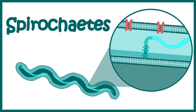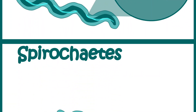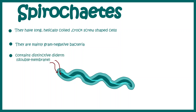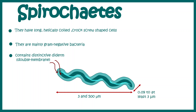In this short video we'll talk about spirochetes. Spirochetes are long helically coiled, corkscrew-shaped cells. They are bacteria and they are generally gram-negative in nature. They contain a distinctive diderm or double membrane organization. Their length is about 300 to 500 microns, whereas their diameter varies from 0.09 to 3 microns.